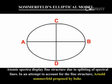Sommerfeld's elliptical model. Atomic spectra display fine structure due to splitting of spectral lines. In an attempt to account for the fine structure, Arnold Sommerfeld proposed elliptical orbits instead of the circular orbits proposed by Bohr.